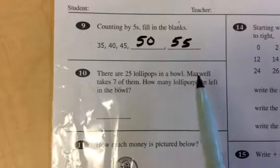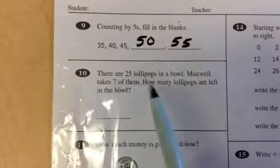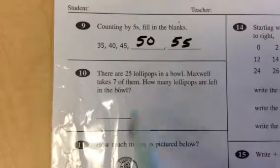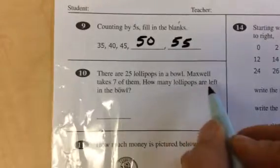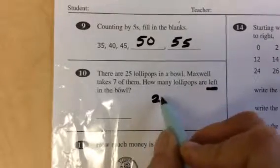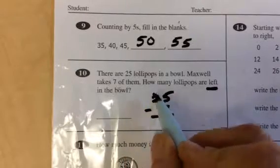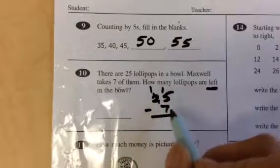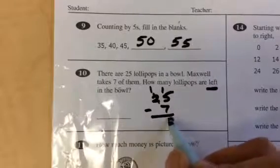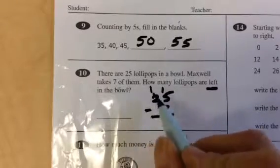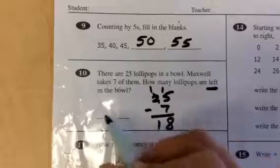And then there are 25 lollipops in a bowl. Maxwell takes 7 of them. How many lollipops are left in the bowl? So if I'm going to say how many are left, it's going to be a subtraction. 25 minus 7. And figure out the sum, right? We're going to borrow a group of 10 here and say 15 minus 7, which is 8. And then 1 minus, or 10 minus nothing is 10. So my sum is 18.